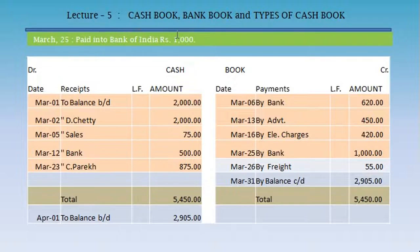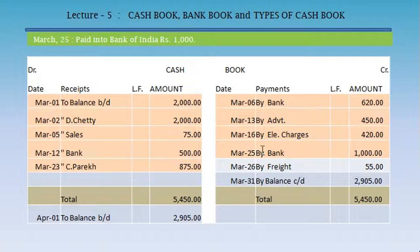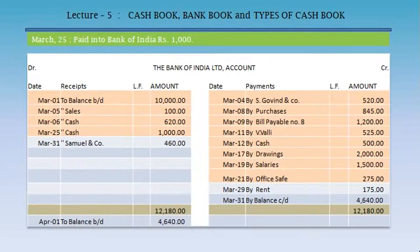March 25: paid into Bank of India, Rs. 1,000. That means our cash will reduce, so we record it on the credit side of the cash book: March 25, by bank, Rs. 1,000. On the contrary, we receive this amount in the bank account, so: Bank of India, March 25, to cash, Rs. 1,000.